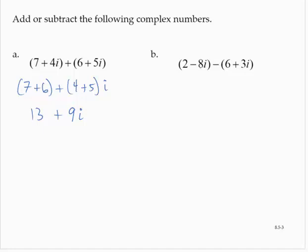So 2 minus 8i subtract 6 plus 3i is 2 minus 6, plus negative 8 minus 3i. That gives negative 4 plus negative 11i, which is usually written as negative 4 minus 11i.